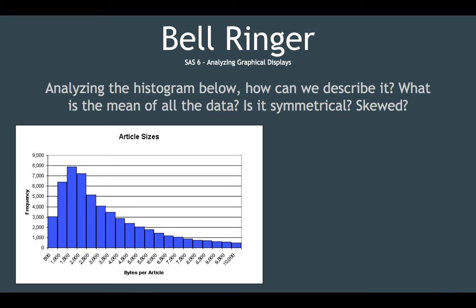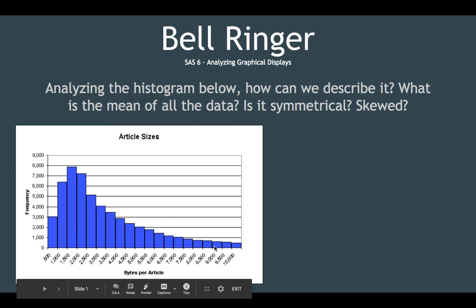What is the mean of the data, and is it symmetrical or is it skewed? The word mean means average. The average would be something we would have to calculate — you would take every one of these columns, find out how many of each there are, multiply the frequency by the bytes per article, find the sum, and divide by the total number of units. That's kind of difficult to do, so we can look and find a balancing point somewhere around 1500 to 2500, because there's a lot of values on both sides that are about equal.